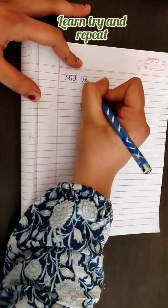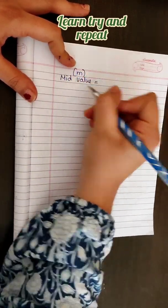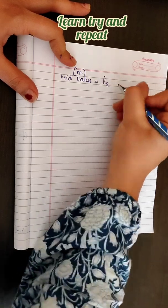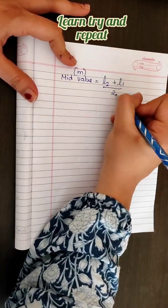The mid-value, denoted by small m, is equal to L2 plus L1 divided by 2.